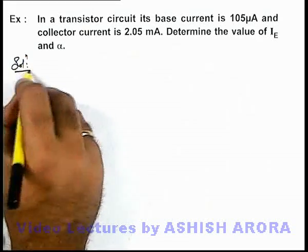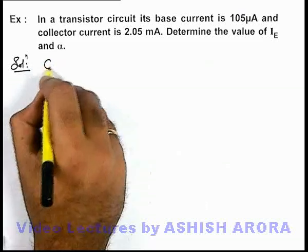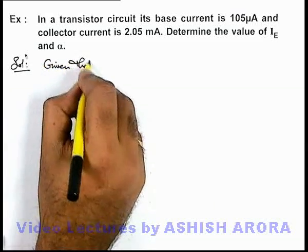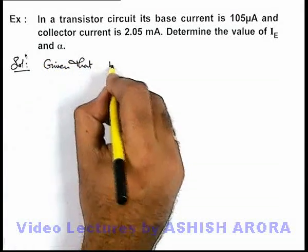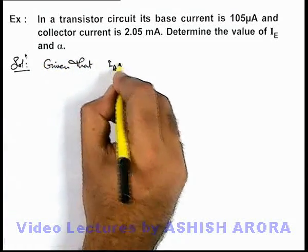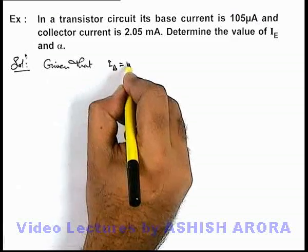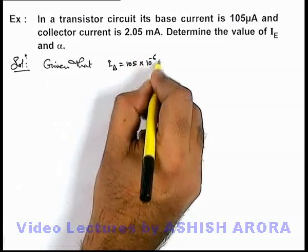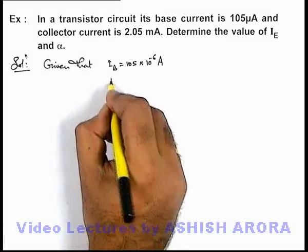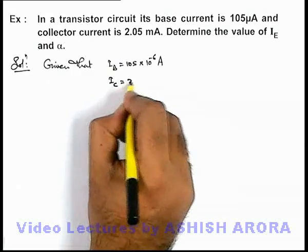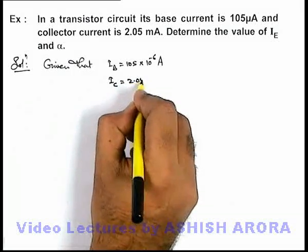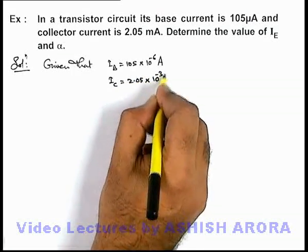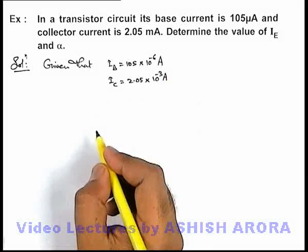Here we can directly write the given values. The base current is one zero five into ten to the power minus six ampere, and the collector current is two point zero five multiplied by ten to the power minus three ampere.